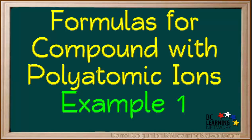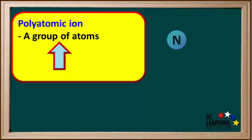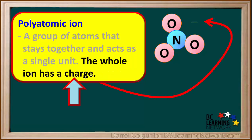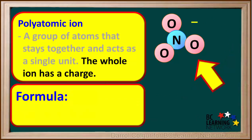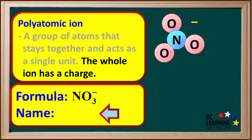Ionic compounds with three or more elements contain polyatomic ions. We'll show you how to write the formulas for compounds with polyatomic ions. A polyatomic ion is a group of atoms that bond together and stays together to act like a single unit. The whole ion has a net charge. In the example shown here, there is one nitrogen atom and three oxygen atoms, and the ion has a charge of negative one. So the formula is NO3-. The name of this polyatomic ion is nitrate.